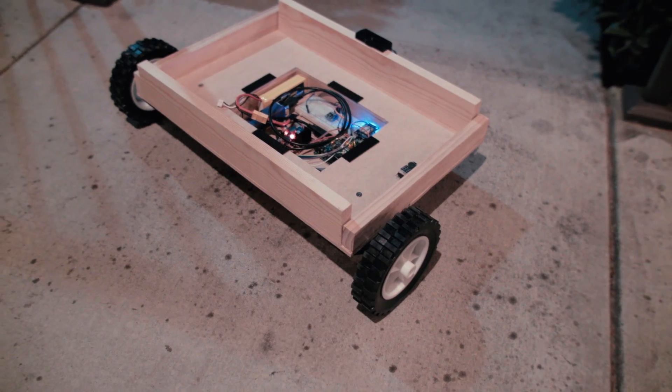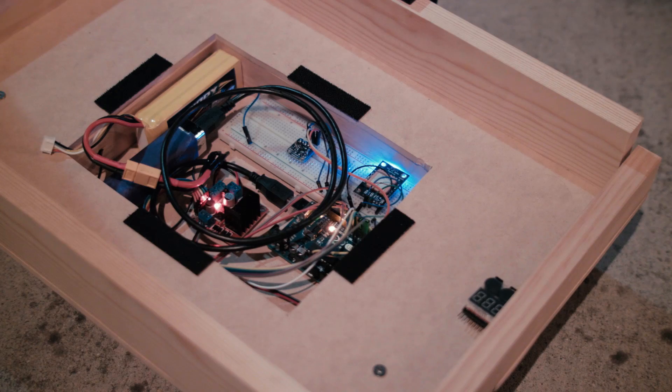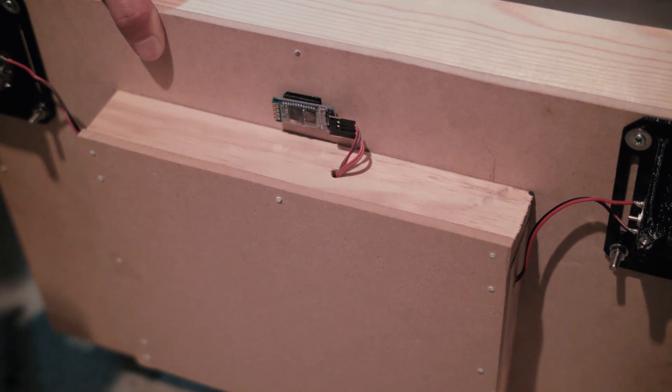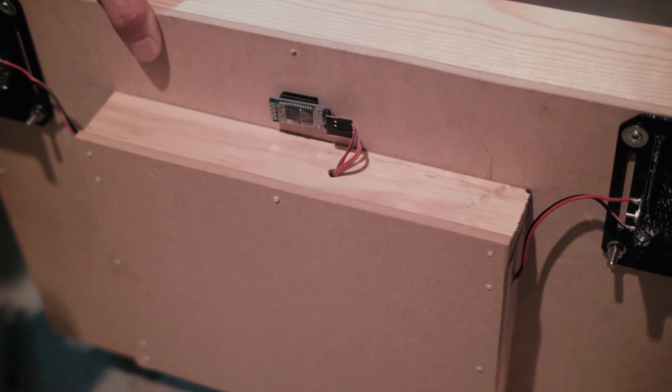There are a couple more things you want to look for when you turn on your robot. One is that the GPS module is blinking, that means it has satellite lock. And two, when your Bluetooth device is connected, it will have two short flashes instead of several short flashes.